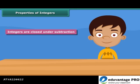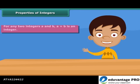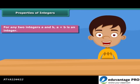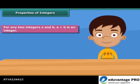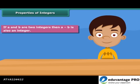In general, for any two integers A and B, A plus B is an integer. Similarly, if A and B are two integers, then A minus B is also an integer.